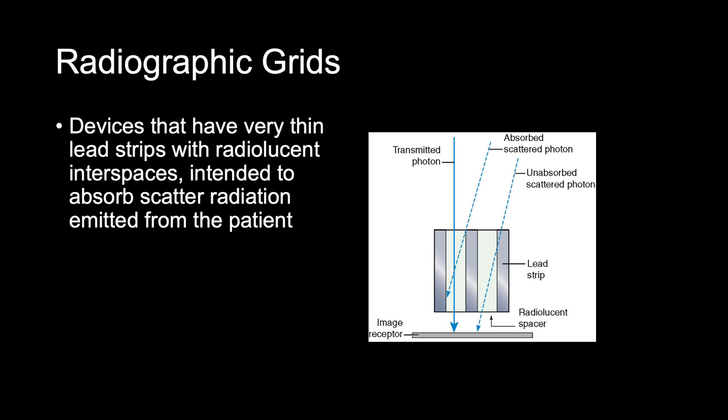Grids work well to improve radiographic contrast, but there are some drawbacks. Because of this, we have to increase our mass when using a grid, and because we are increasing our mass, that will result in a higher patient dose of radiation. Grids are typically only used when the anatomic part is 10 cm or more, which is also 4 inches or more in thickness. We can also use grids for imaging procedures requiring more than 60 kVp.